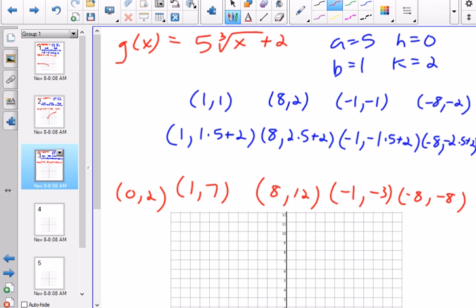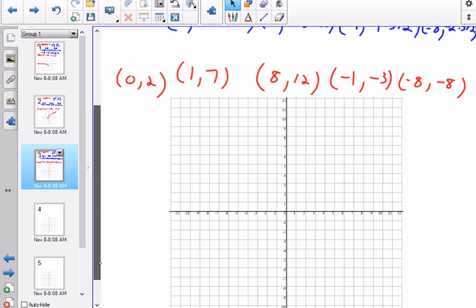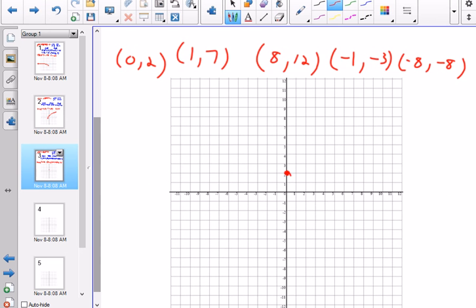So now I have all of my points that I want to graph. Let's graph them. 0,2. 1,7. 8,12. Which is up here. Negative 1, negative 3. And negative 8, negative 8. If I try to connect the dots with as smooth a line as possible, that would look something like that.